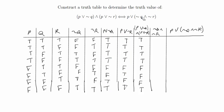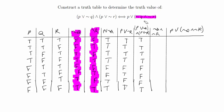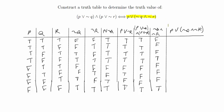Now we work on the right-hand side. First, we fill in ¬Q∧¬R by looking at the not Q and not R columns. Since it's AND, both must be true: false, false, false, true, false, false, false, true. Then for the full right-hand side P∨(¬Q∧¬R), since it's OR, either P or (¬Q∧¬R) must be true. The first four rows are true because P is true, then: false, false, false, true.